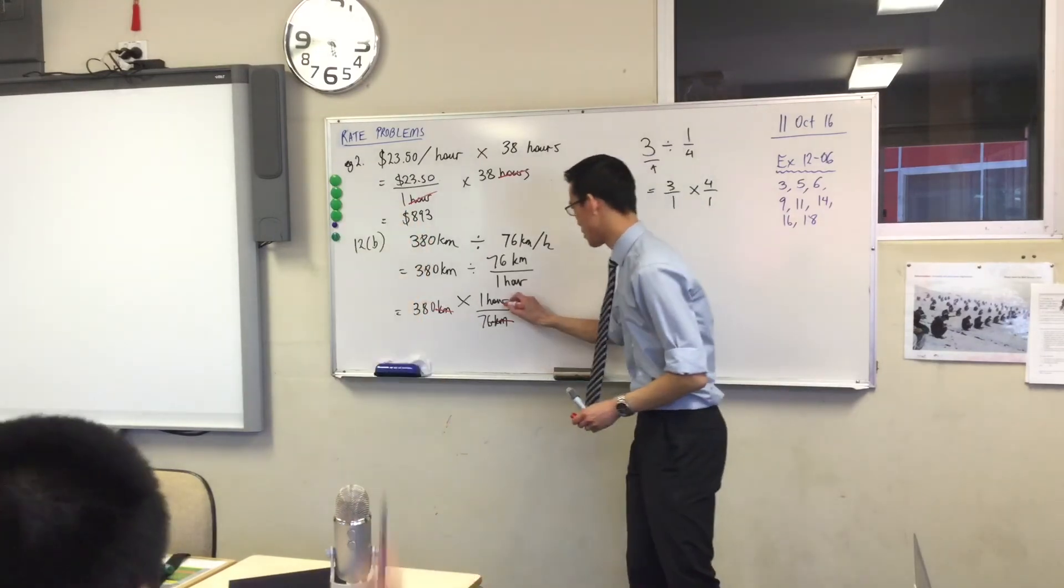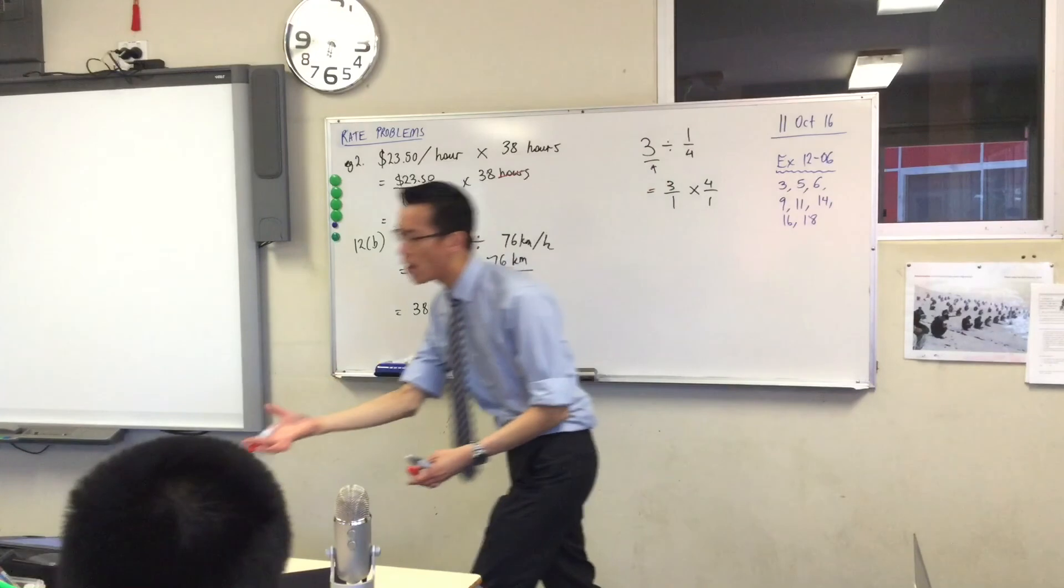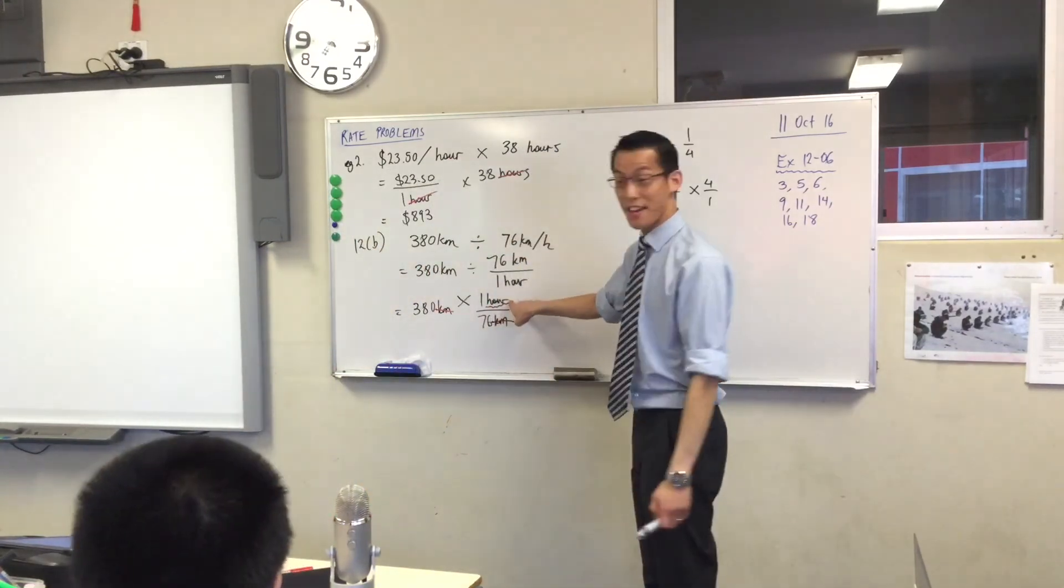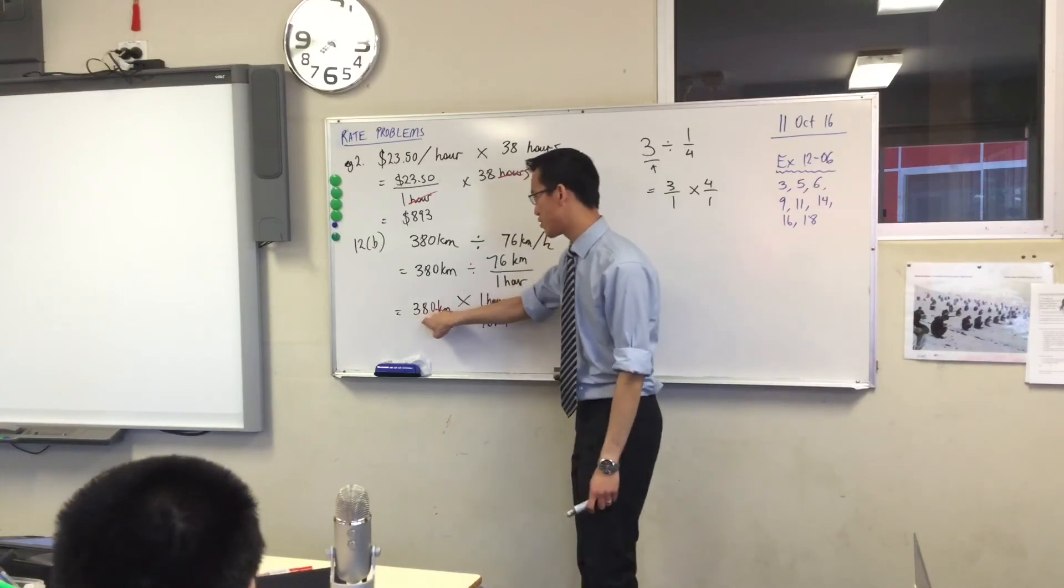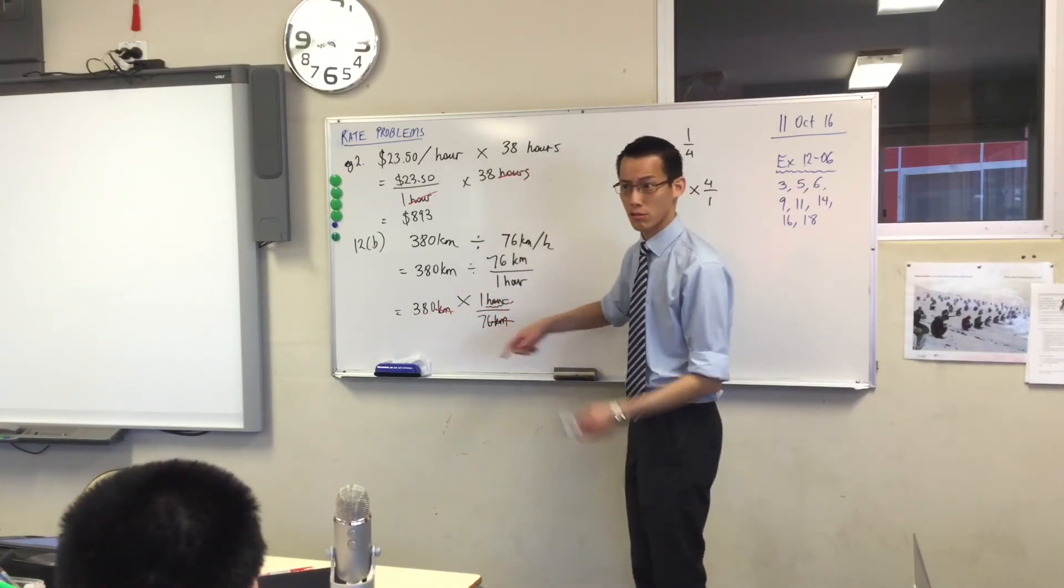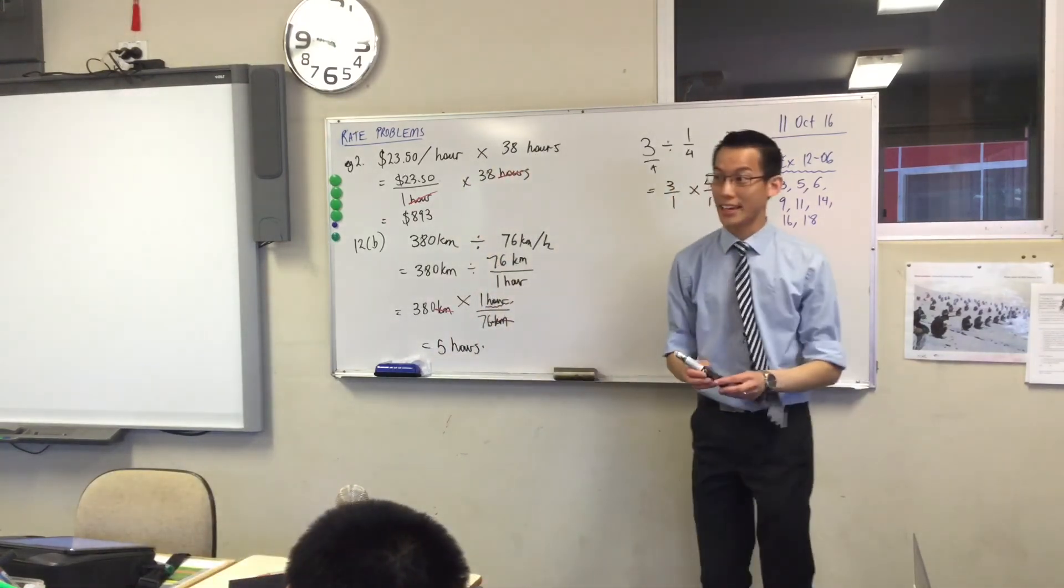Hours. Hours. Is that what I was after? I was after a time, wasn't it? It said how long? That's a time question, right? So, I've got the right unit. All I have to do is 380 divided by 76, which is? 500. Nailed it. Okay?